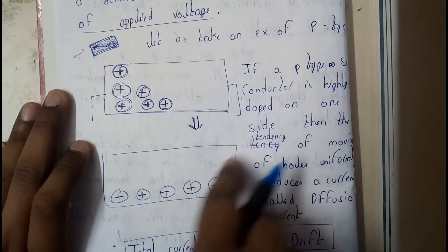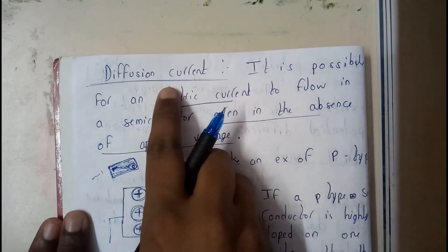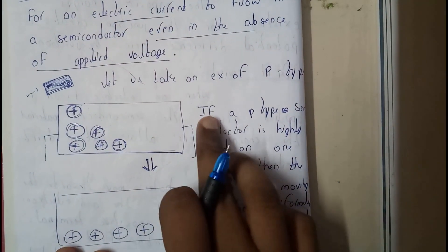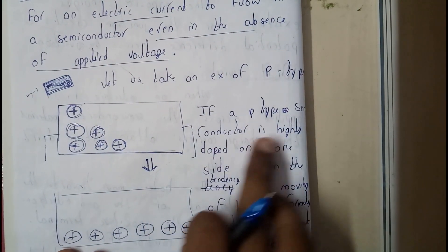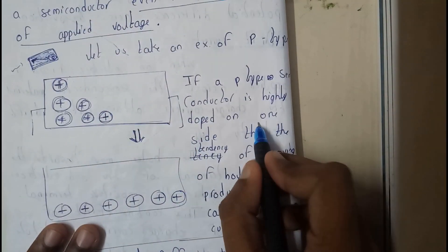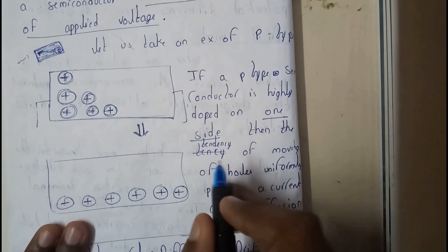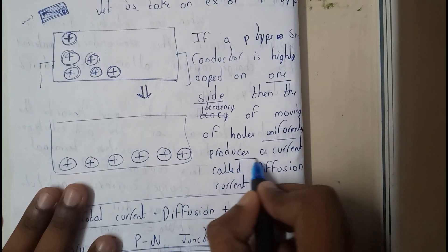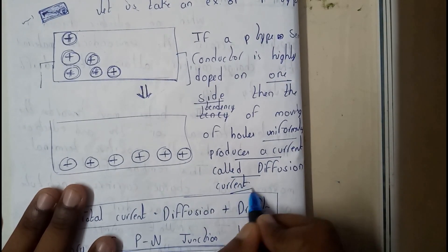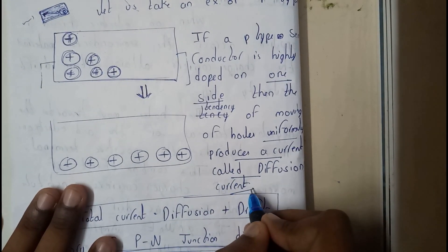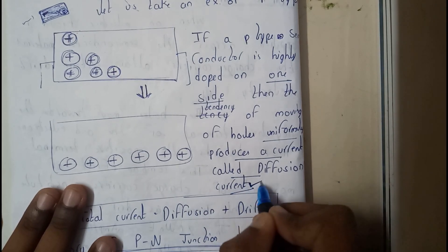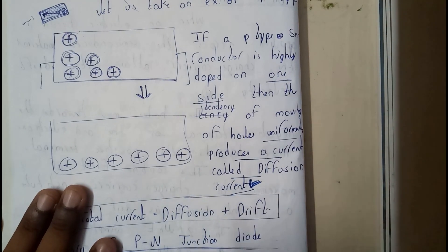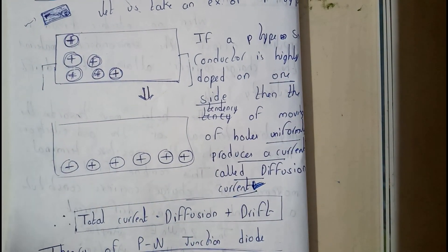We will not give any kind of supply, yet this happens because of diffusion current. In terms of theory, if a P-type semiconductor is highly doped on one side, the tendency of holes moving uniformly produces a current called diffusion current. This diffusion current will be really small.